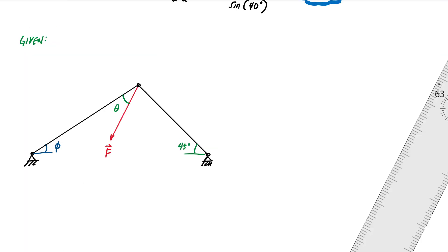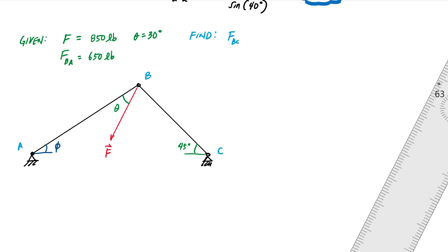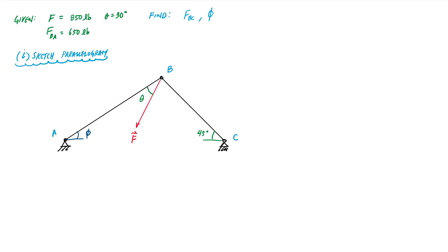Let's try another one. I have a truss system with points A, B, and C. The magnitude of F is 850 pounds and it is 30 degrees from member AB, so theta equals 30 degrees. I also know the component of force acting along BA is 650 pounds. I want to find the force along BC and the angle phi.